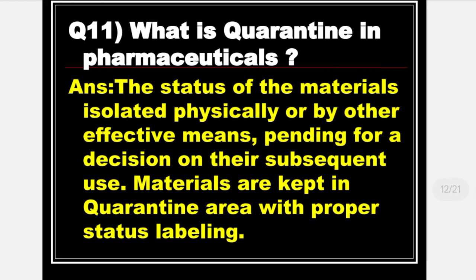Next is: What is Quarantine in Pharmaceuticals? Answer: Quarantine is the status of materials isolated physically or by other effective means, pending a decision on their subsequent use. Materials are kept in a quarantine area with proper status labelling.